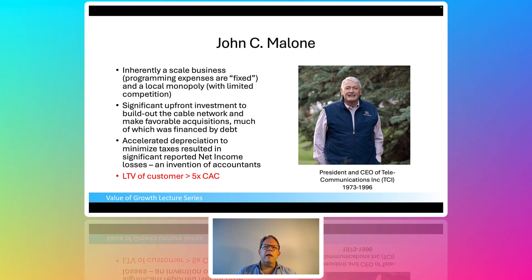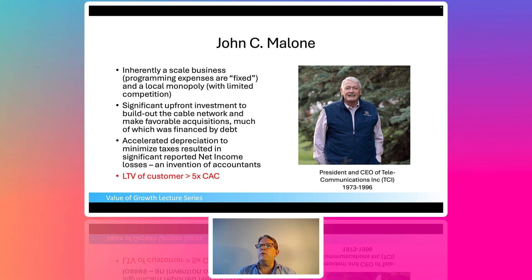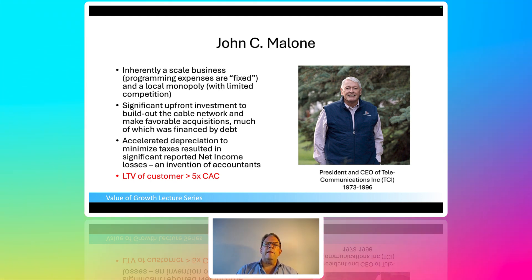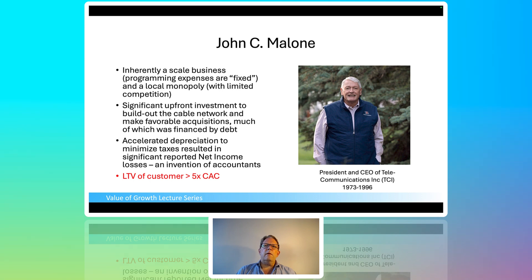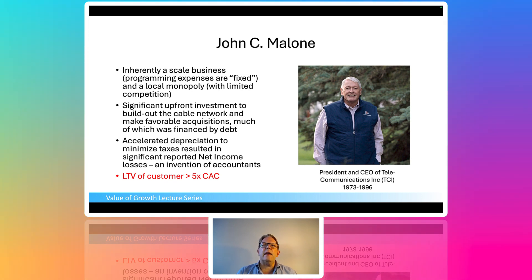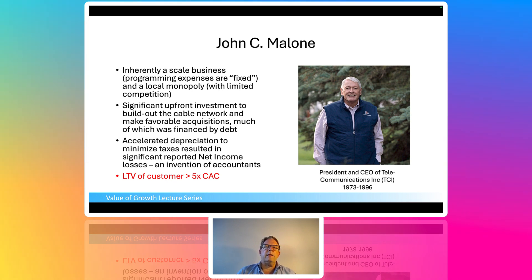Cable companies are essentially a local monopoly with limited competition and fairly high barriers to entry. John realized he wanted to grow as fast as possible because it was a local monopoly. It's also very sticky — people do not turn off their television service. At this time it was television only, and many people had no access to television any other way. John and his team found that people were reluctant to turn off TV; if they had financial hardship, TV was generally one of the last things to go. So: scale business, local monopoly, high fixed costs, high barriers to entry, high switching costs.